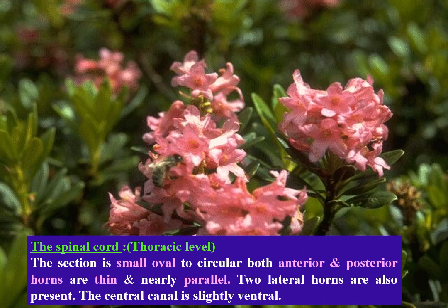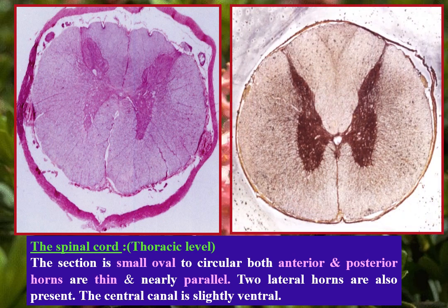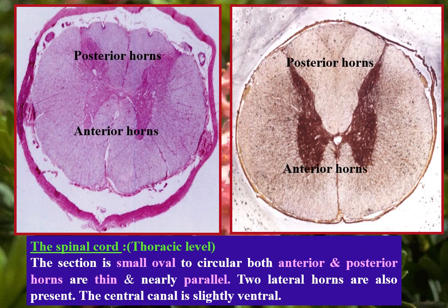Spinal cord, thoracic level — by hematoxylin and eosin and silver. The section is a small oval to circle. Both anterior and posterior horns are thin and nearly parallel. Two lateral horns are present. The central canal is slightly ventral.